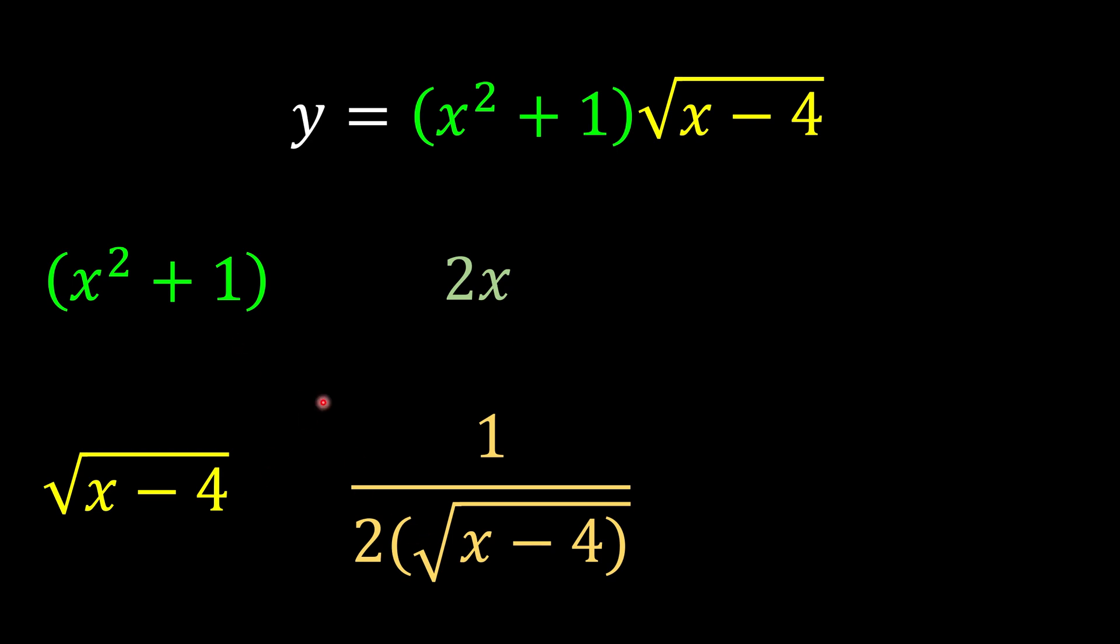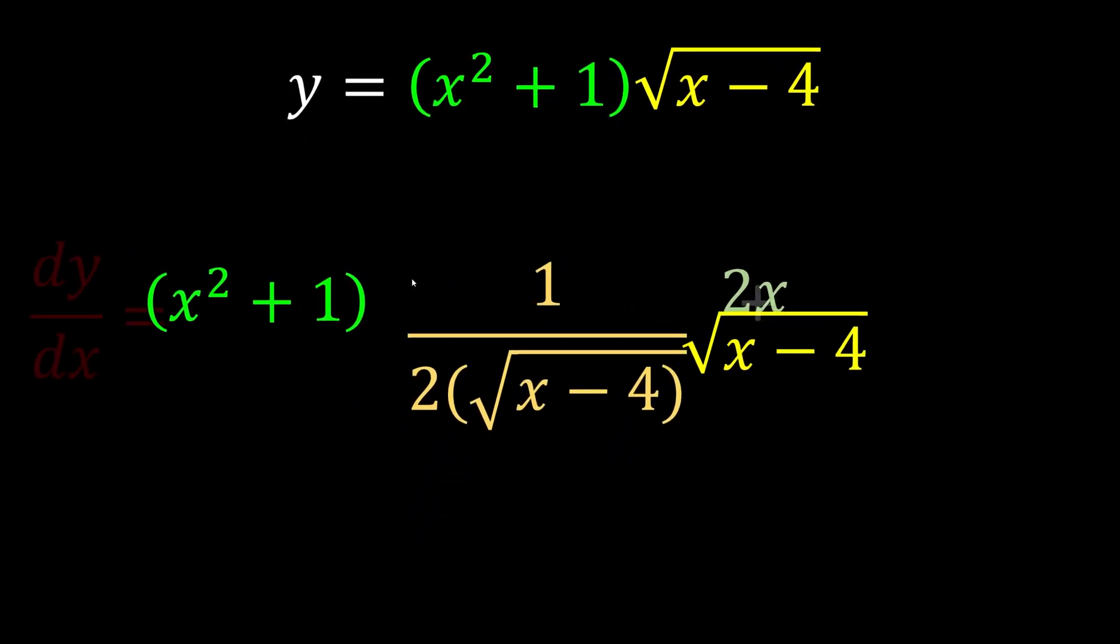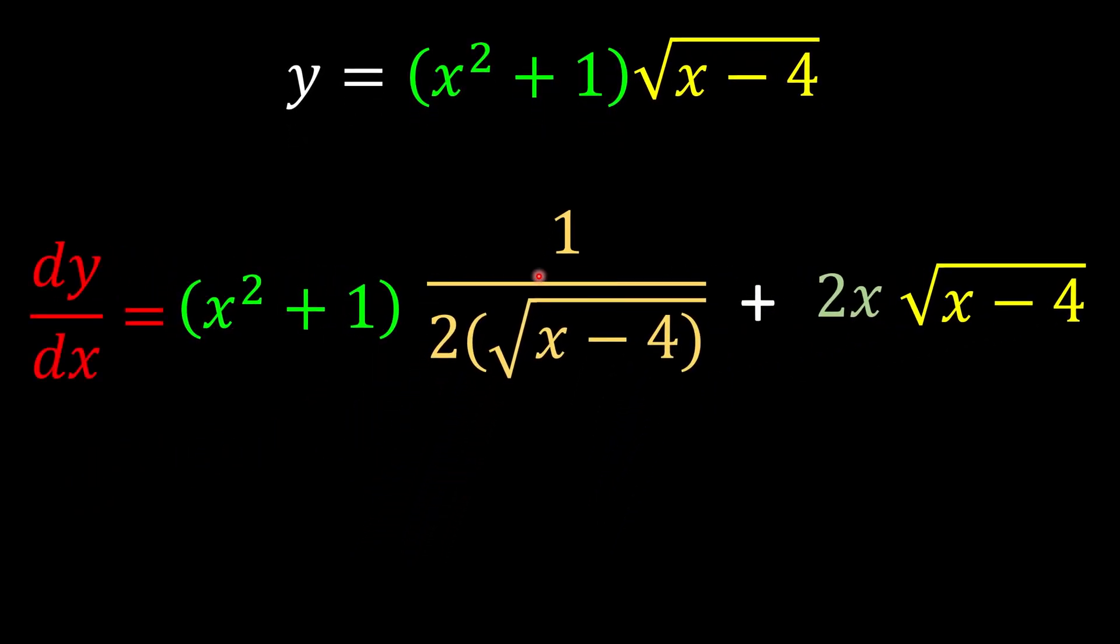After we have 2 couples, what should we do? We should just cross multiply it and put it in one line. After they are in one line, we're going to simplify it.